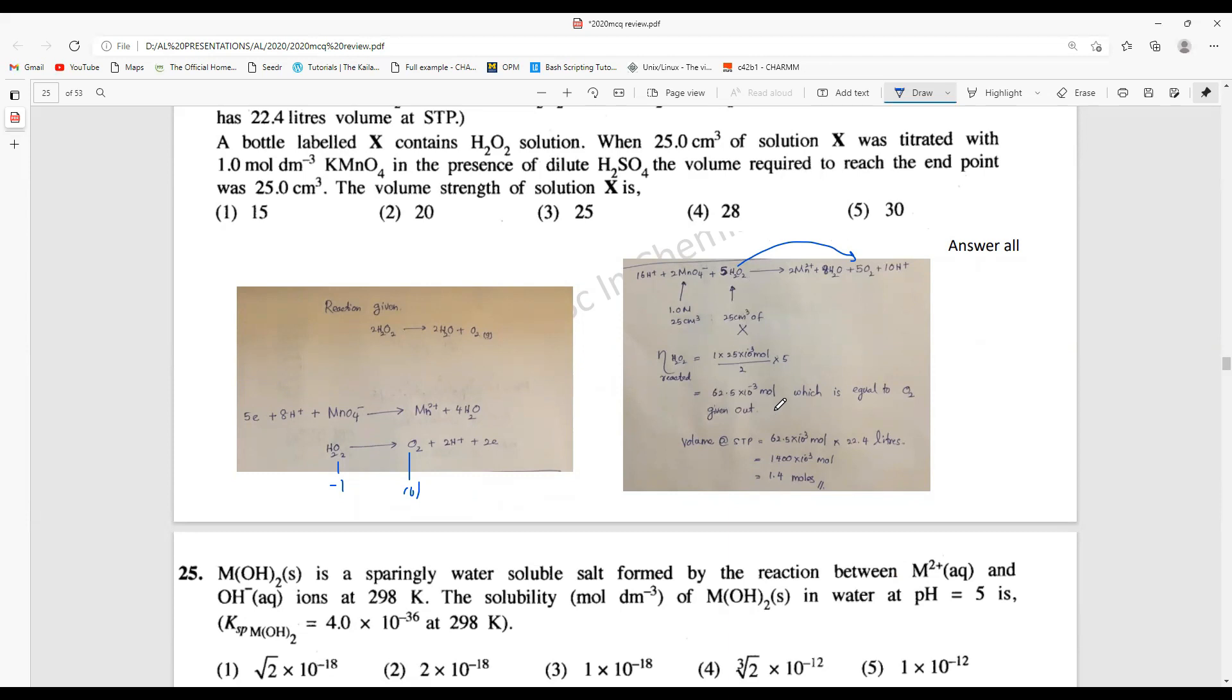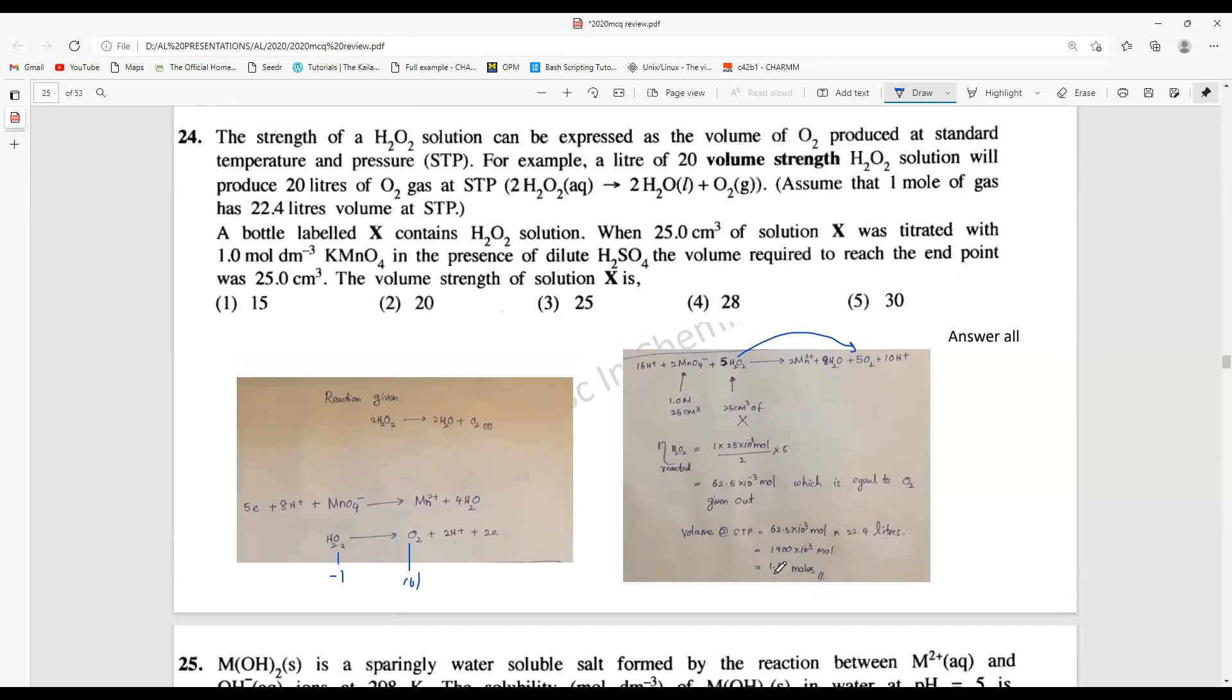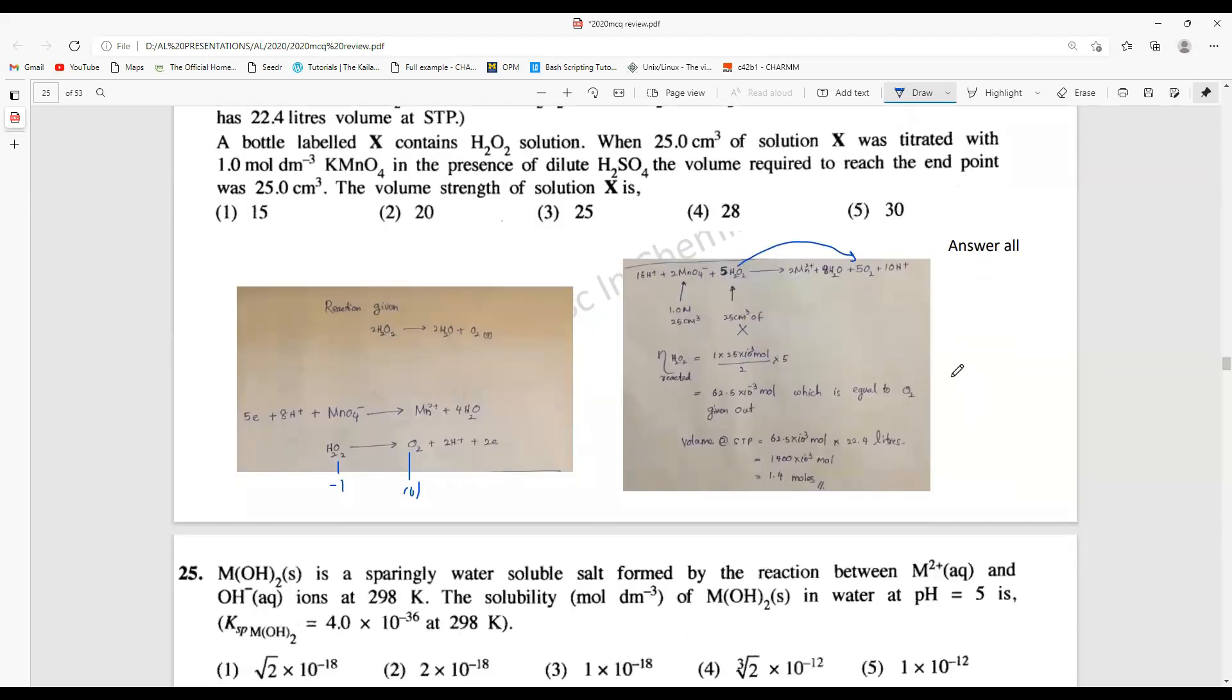This is 62.5 times 10 to the power minus three moles. Then I know at STP for one mole, the molar volume is 22.4. So that the volume should be like 1.4 moles that should be formed for this particular amount. This calculation should be a little bit different. For one mole, the volume is 22.4.